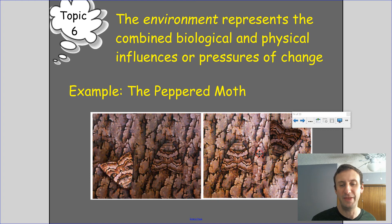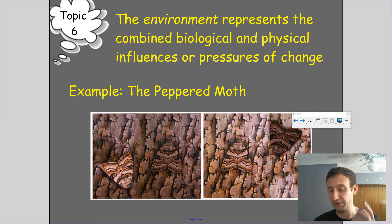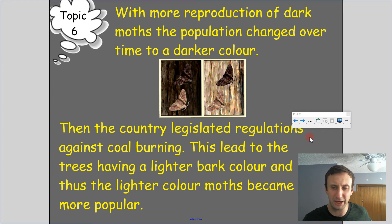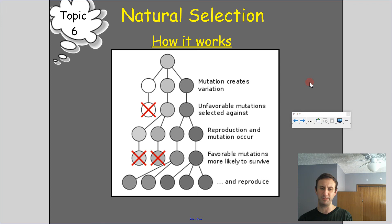The lighter moth was now the one that would survive, and the dark moth was the one that would die because it wasn't as camouflaged. That species ended up getting lighter in color as conditions changed. The country legislated regulation against coal burning, which led to trees having a lighter bark color, and thus the lighter-colored moth became more prevalent again over time.